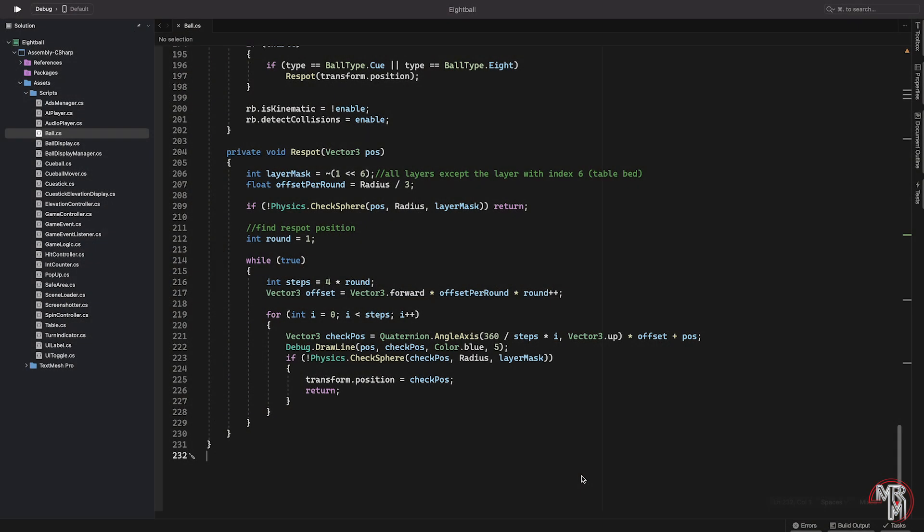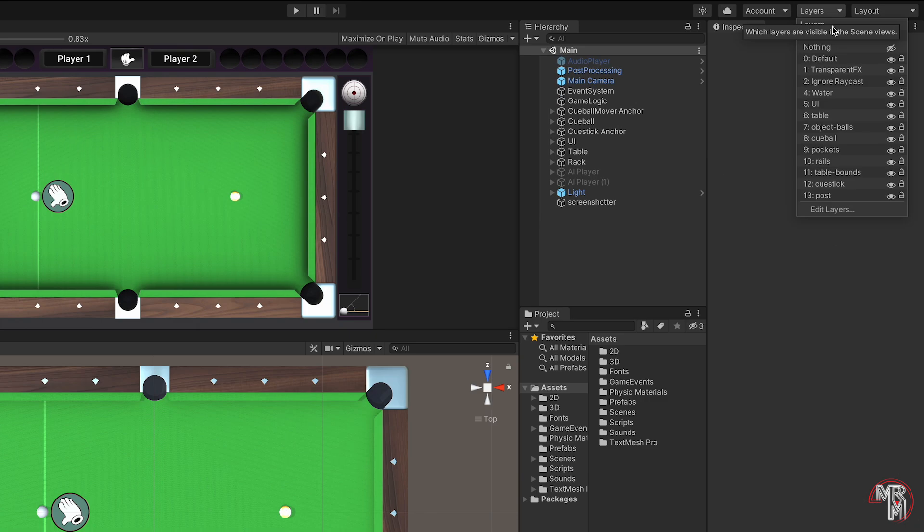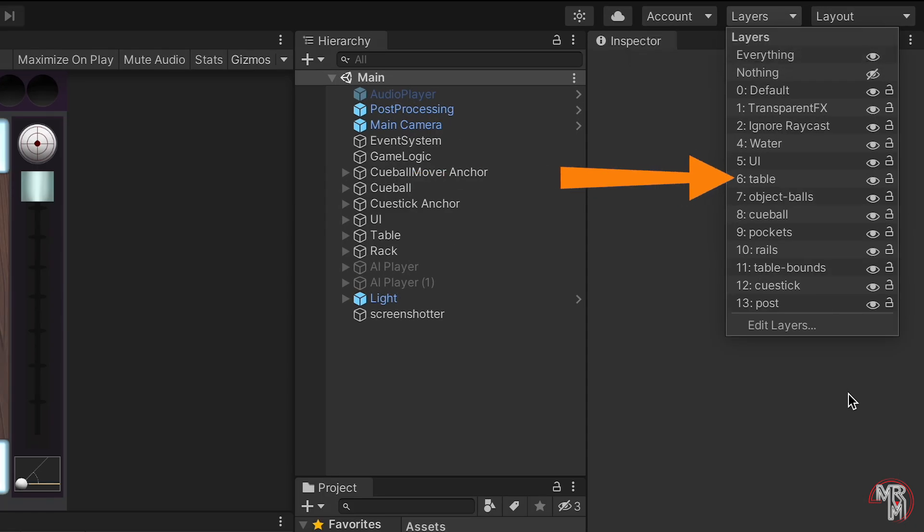We do use bit masking in our 8-ball pool project. For example, here, by shifting 1 to the left by 6, we get a mask that corresponds to layer number 6. And then, by inverting the mask, we create a mask that targets all layers except layer 6, which in our project is assigned to the game objects that correspond to the physics representation of the pool table.